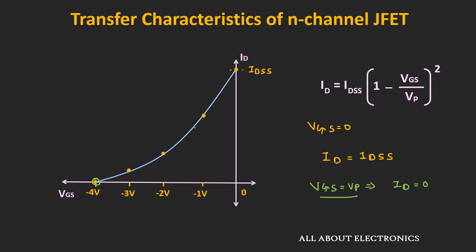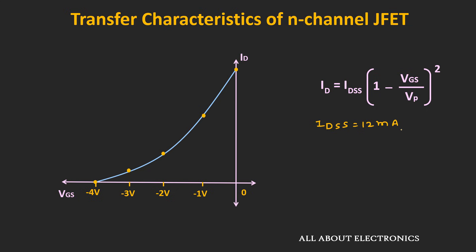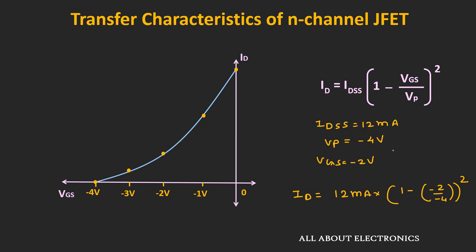Now let's take the value of Vgs in between these two extreme points. So let's say for some JFET, the value of Idss is equal to 12mA. And for that JFET, the value of pinch-off voltage Vp is equal to minus 4V. And let's say we want to find the value of drain current whenever Vgs is equal to minus 2V. So if we put all these values, then the drain current Id will be equal to 12mA times (1 - (-2)/(-4)) whole square. And if we simplify it, then the value of Id will be equal to 3mA. So whenever the Vgs is equal to minus 2V, the value of drain current Id is equal to 3mA.